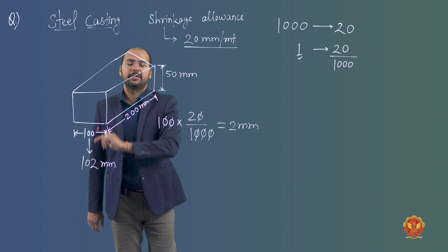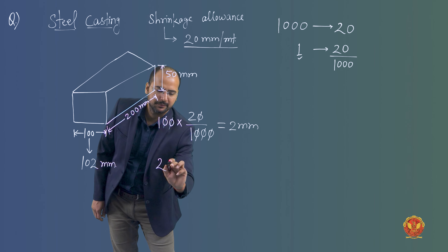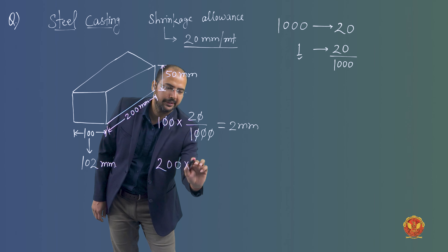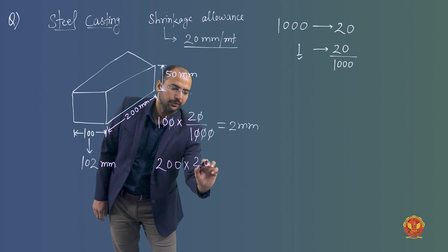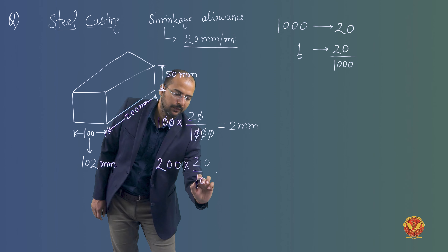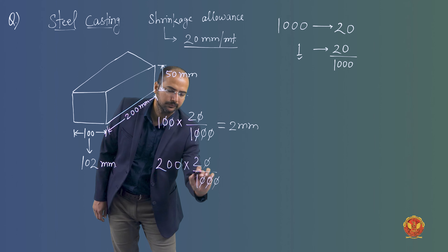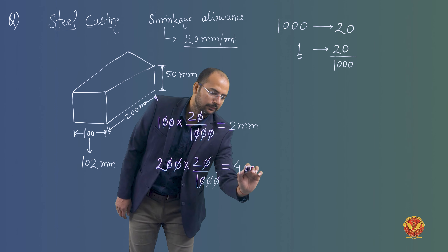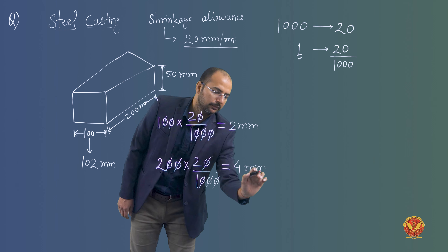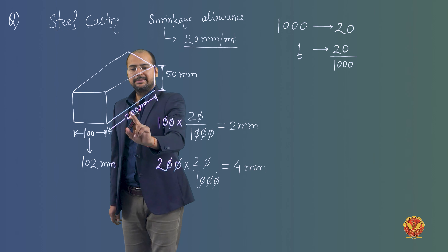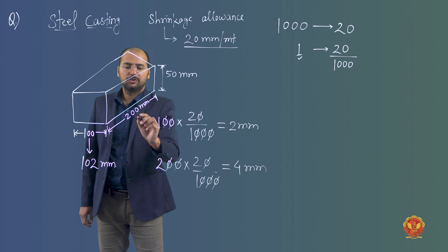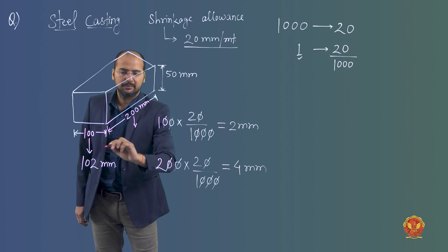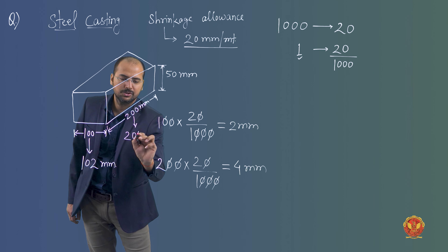For the 200 mm dimension, we calculate: 200 × 20 / 1000 = 4 mm. So we add 4 mm to this dimension, making it 204 mm for the pattern.